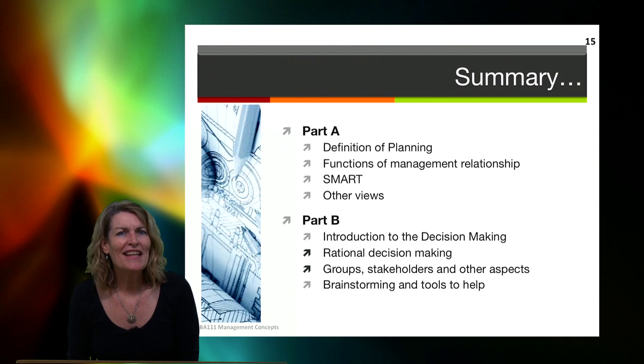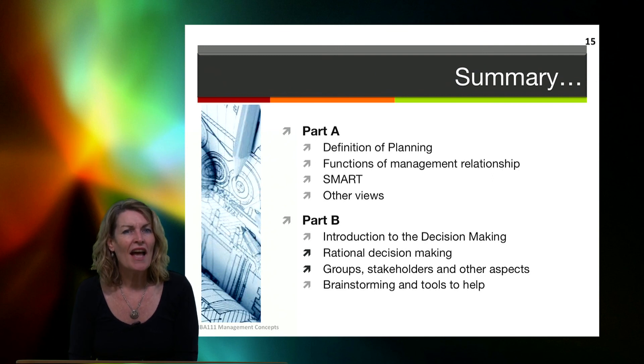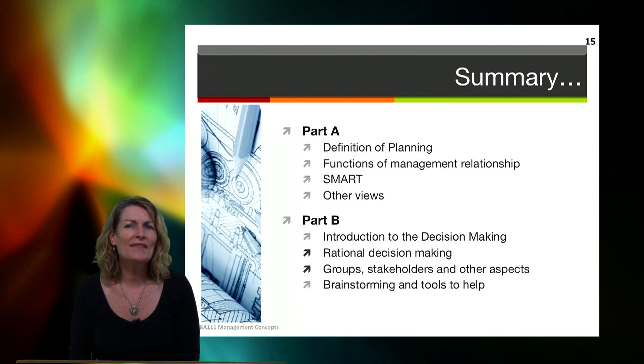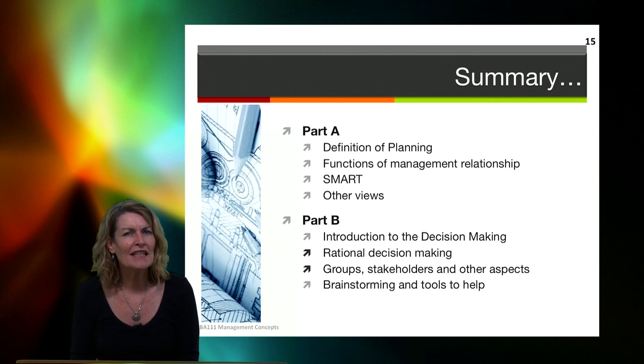So in summary, part A of this recording, we've looked at the definition of planning and how it links into the functions of management, that relationship. And we explored it a little bit more in depth, the SMART model. And we've also acknowledged that there's other views, so you need to be familiar with those. In part B, we've introduced decision-making, the rational decision-making process. We've played around with that with our job applicant. And we've also touched on group decision-making, stakeholders and other aspects. And I've noted brainstorming here. And sometimes when we look at group decision-making, brainstorming is a great tool. Your textbook and your resources talk about some of these tools that are really handy, not just to help you with group decision-making, but also in creating pools of ideas and alternatives in your decision-making process. So thanks for listening and I look forward to seeing you in the next topic.